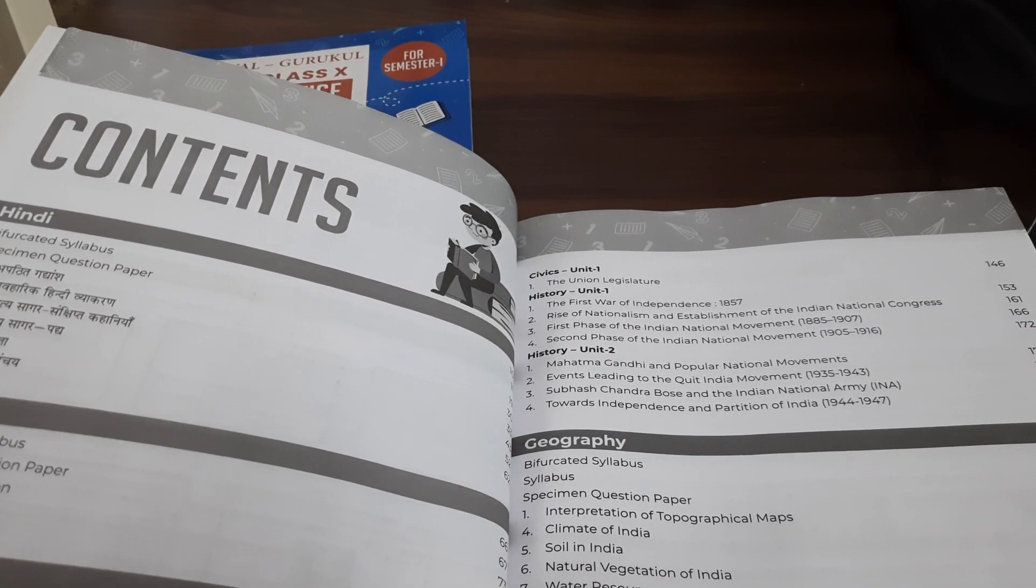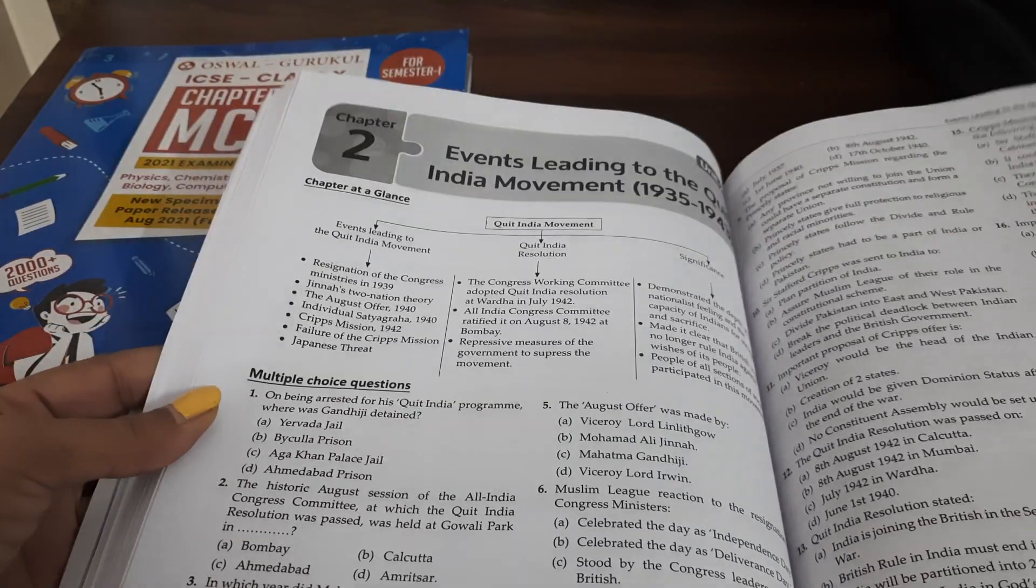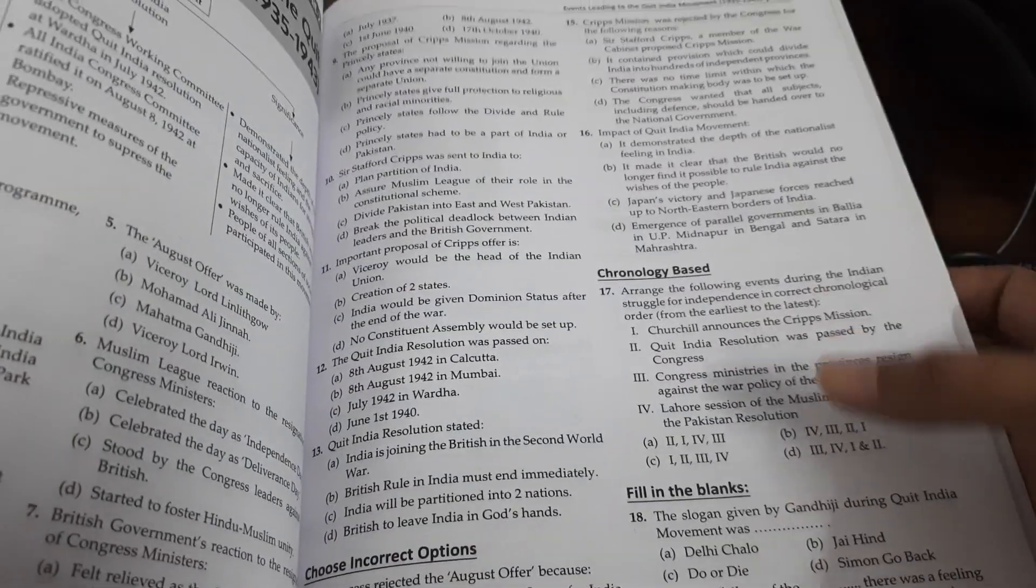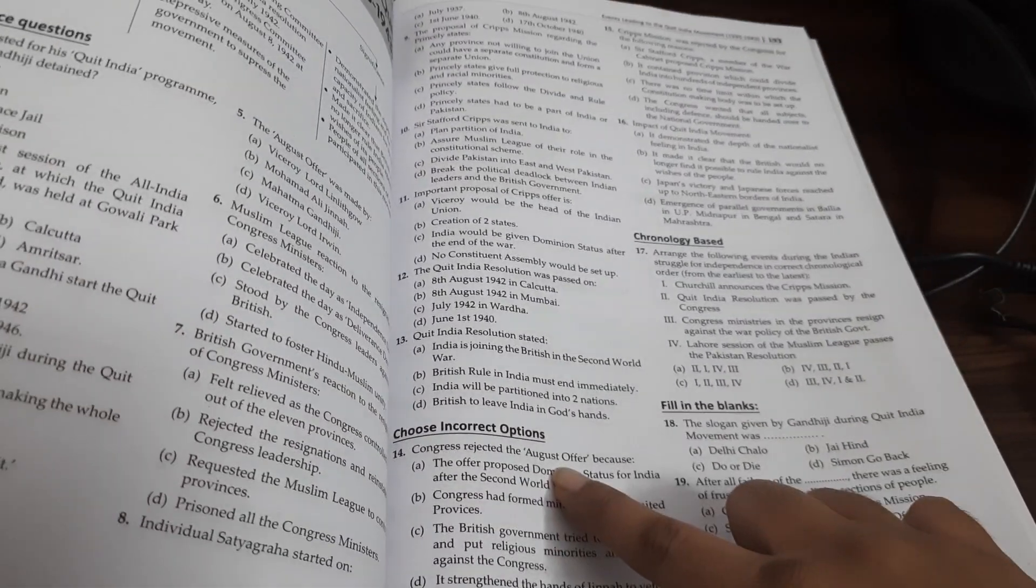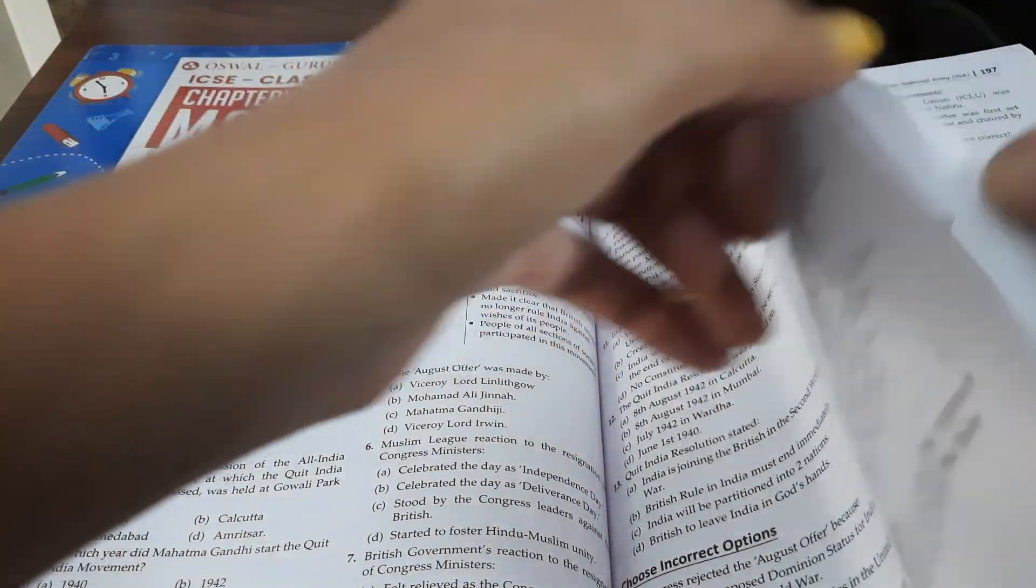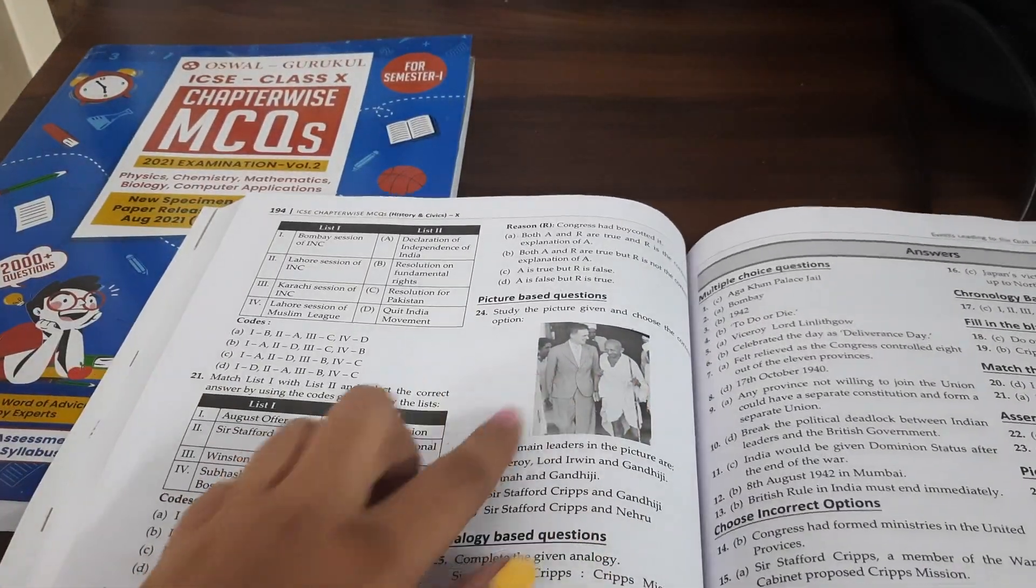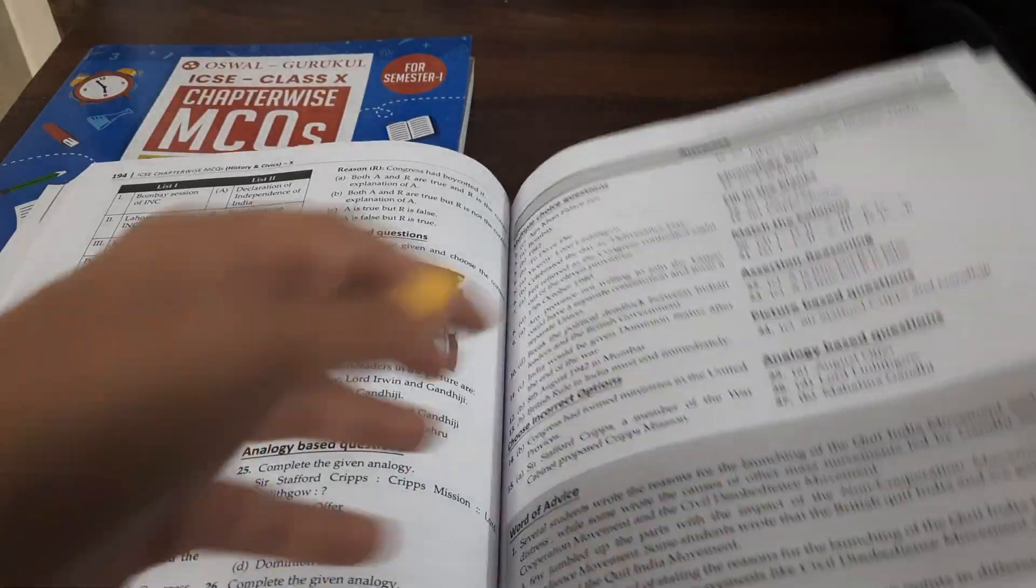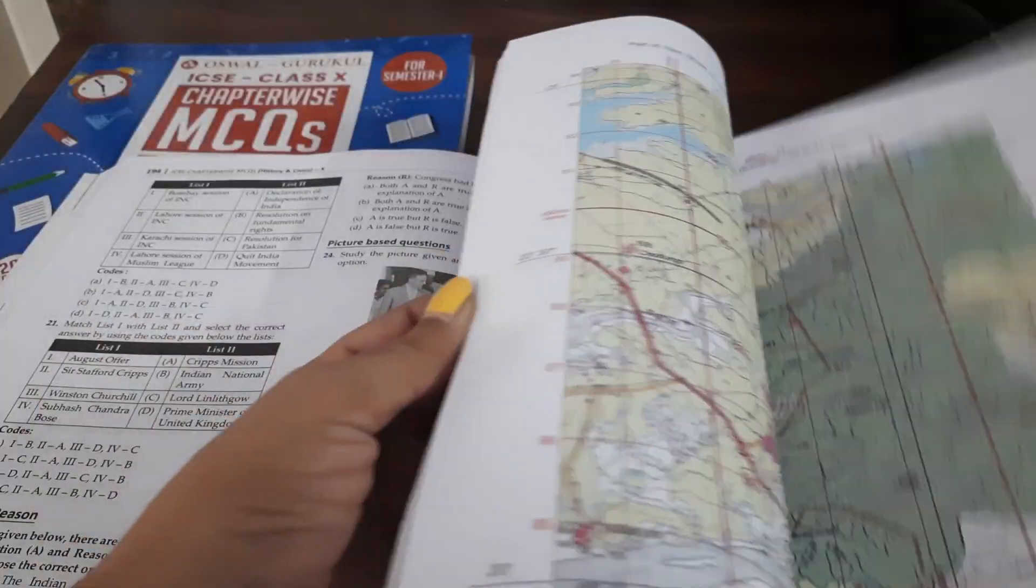History, Civics, you all know what the syllabus is. Let me show it to you. For History, it's so amazing. The chapter at a glance is given. Multiple choice questions are given. Then, chronology based questions. Fill in the blanks types. Choose the correct options. Choose the incorrect options. Match the columns. Then picture based questions are there. Analogy based questions are there. Assertion reason based questions are there.